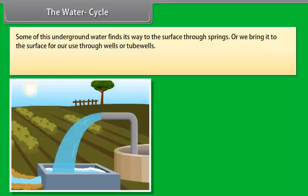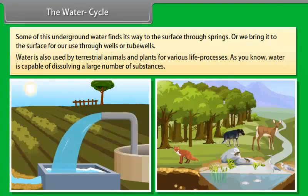Some of it seeps into the soil and becomes part of the underground reservoir of fresh water. Some of this underground water finds its way to the surface through springs or we bring it to the surface for our use through wells or tube wells. Water is also used by terrestrial animals and plants for various life processes. As you know, water is capable of dissolving a large number of substances.